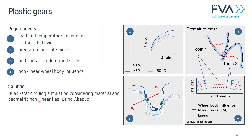Coming from steel materials, we are used to linear elastic material behavior — this is not the case for plastic materials. With increasing strain, the slope decreases, so the material gets less stiff. Also, for different temperatures we have different stress-strain curves. This reduced stiffness means premature and late mesh are important issues to consider, as teeth come into contact that are usually not in contact.